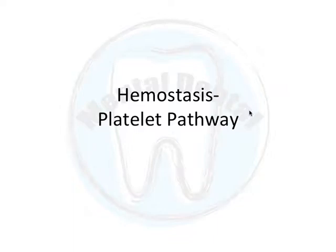Hey guys, it's Ryan. In this video we're going to talk about hemostasis, which is the process of causing bleeding to stop. There are two different components to hemostasis: the platelet pathway, which this video is going to be about, and the coagulation cascade, which the second video will be about. The most important thing to take away is that those two processes are separate — the platelet pathway is one process and the coagulation cascade is an entirely different process — both of which work hand-in-hand to cause a clot to form.